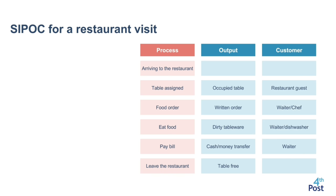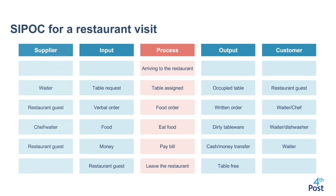Continuing through the diagram — process, output, customer, input, then suppliers — and as you can see, I have limited it to six process steps. For example, when the customer arrives at the restaurant, there are no suppliers, input, output, or customers — it's just a process step. For 'get assigned to a table,' the supplier is the waiter, the input is the table request, the output is an occupied table, and the customer is the restaurant guest, since they are the ones receiving and sitting at the table. For 'order food,' the supplier is the restaurant guest, the input is a verbal order, the process is ordering the food, the output is a written order, and the customer is the waiter or the chef. You continue down the diagram in the same way, and this is a great example to showcase the SIPOC Diagram.